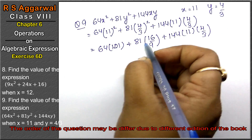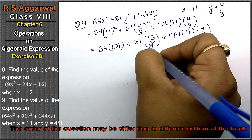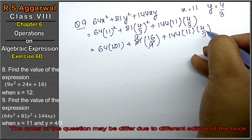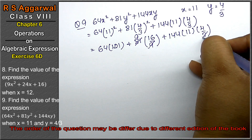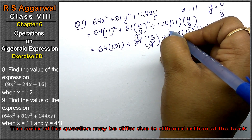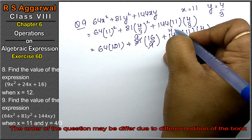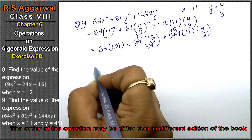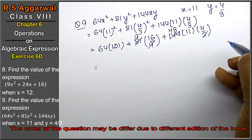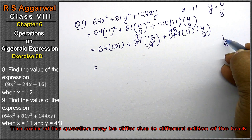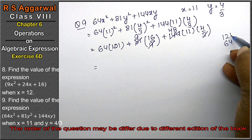Now, computing the parts: 9 × 9 is 81. 3 × 1 is 3, 3 × 4 is 12, 3 × 3 is 9. So 64 × 121.